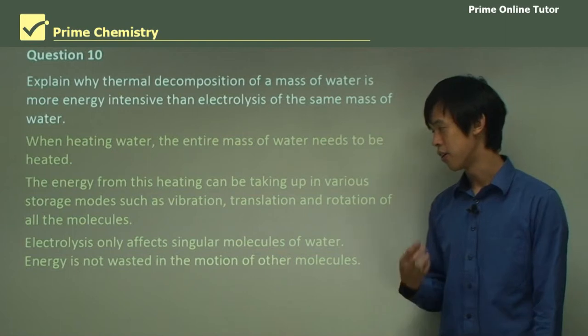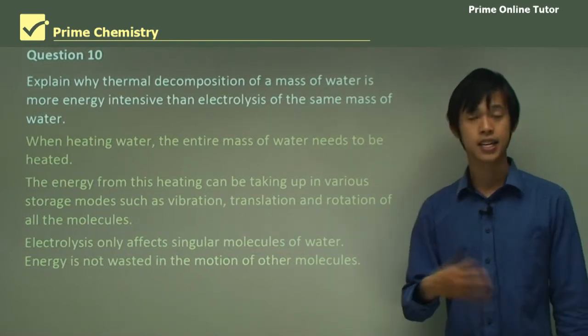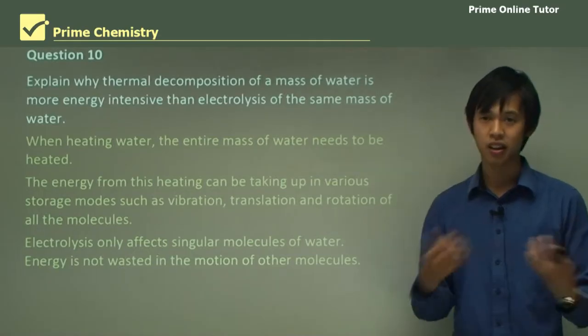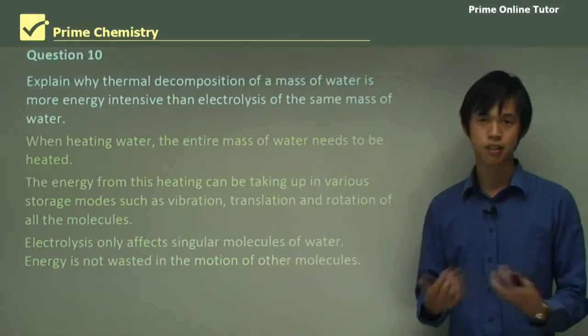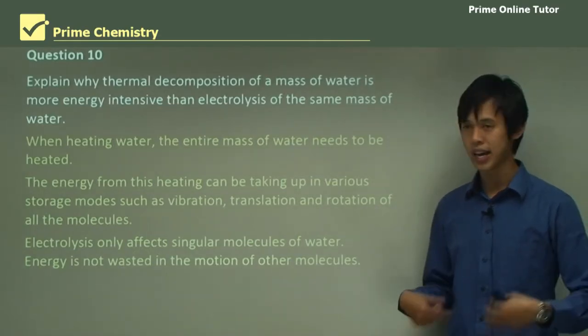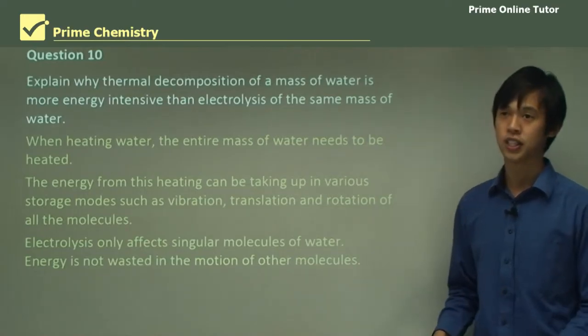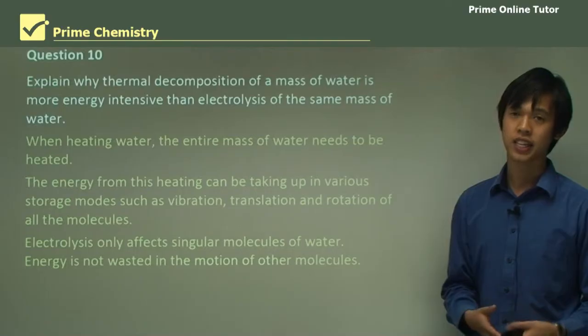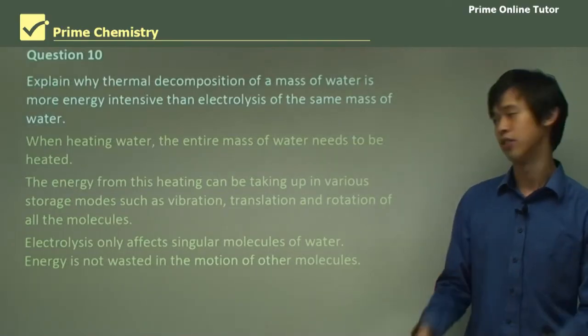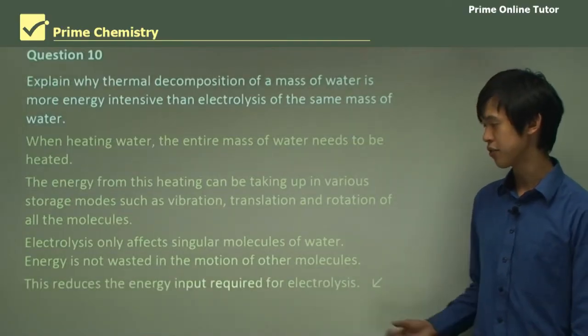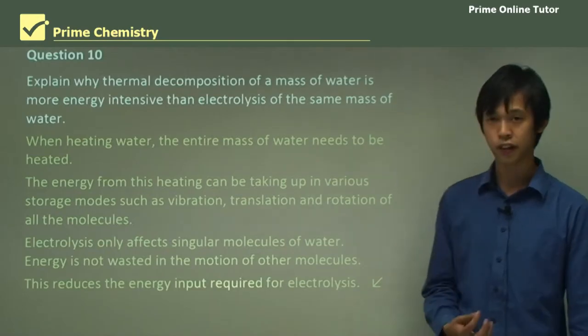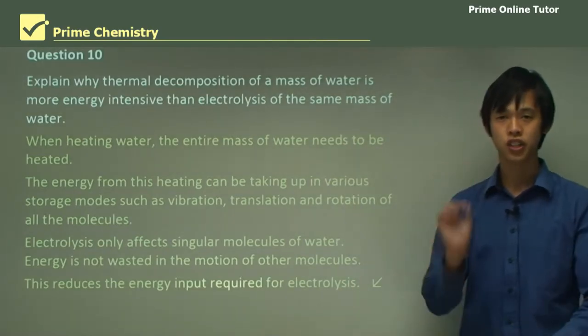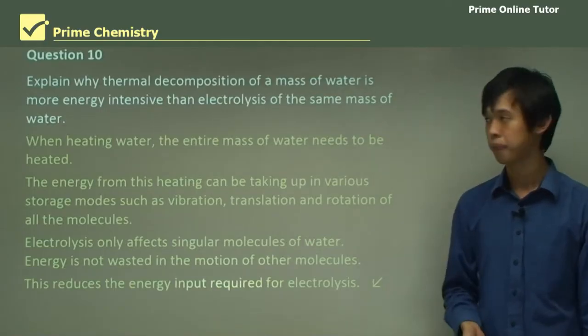Now electrolysis only affects singular molecules of water at a time. And so energy is not wasted in moving other molecules from place to place. So that's why electrolysis may be a little bit more energy efficient in actually turning it into hydrogen and oxygen. And so this reduces the total energy input for electrolysis because it's not having to affect the whole mass of water, just singular molecules at a time.